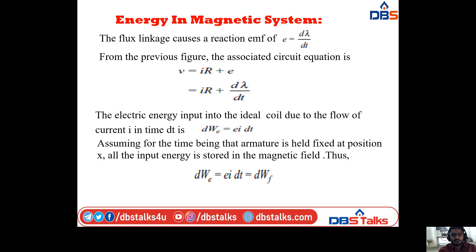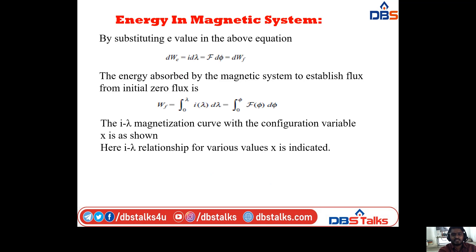The electric energy input into the ideal coil due to the flow of current I in time dt is dWe = e · I · dt. Assuming the armature is held at fixed position x, all the input energy is stored in the magnetic field. Thus dWe = e · I · dt = dWf. By substituting e, dWe = I · dλ = dWf.